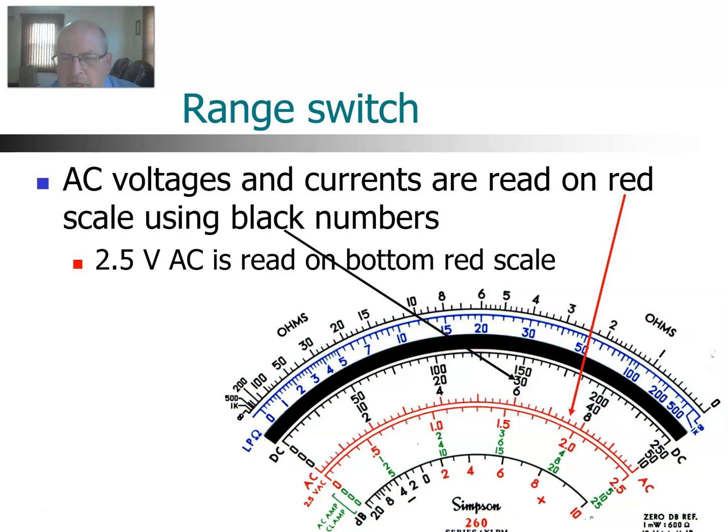So what range scale do we use for different ranges? First off, we're going to utilize the black scale and the black numbers in the middle here for all of your DC readings, for DC voltage and DC current. When you get to AC, it's a bit different. You're still reading the black numbers, but you're going to read the red scale. So all your AC readings for voltage and current will be reading the red scale, but the black numbers.